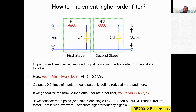Now you can ask how to design or implement a higher order filter, because there is a problem with lower order filters. Higher order filters can be designed by simply cascading first order low pass filters together. This is one first order low pass filter, and this is another — just cascading them together in series.